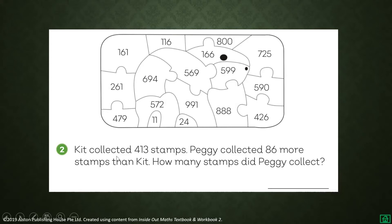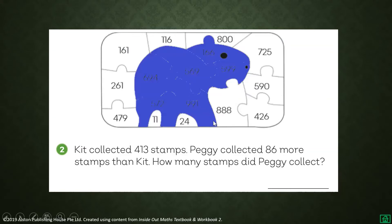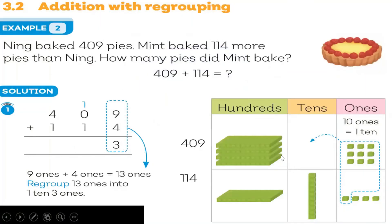Number two. Keith collected 413 stamps. Piggy collected 86 more stamps than Keith. How many stamps did Piggy collect? 413 plus 86 is equal to 499.